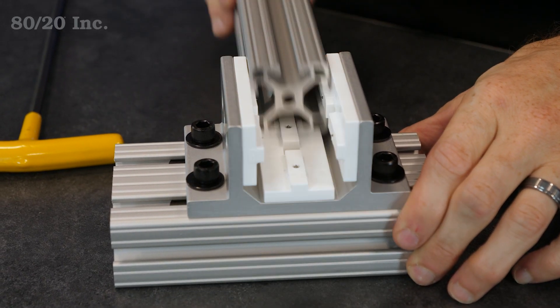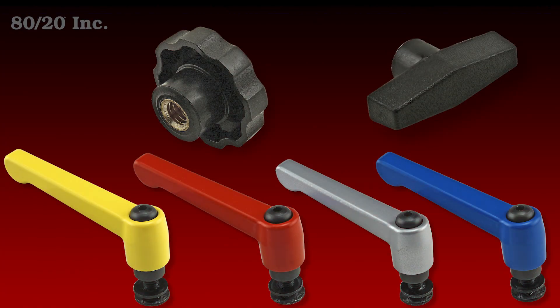Now one other thing you may want to consider is a brake. Our brake kits come in several different styles, and they help you lock your linear bearing into place.